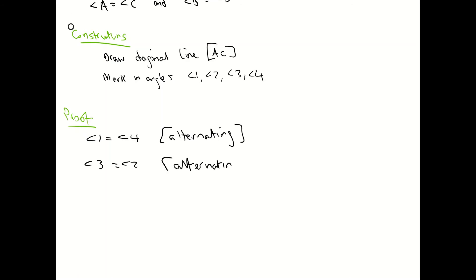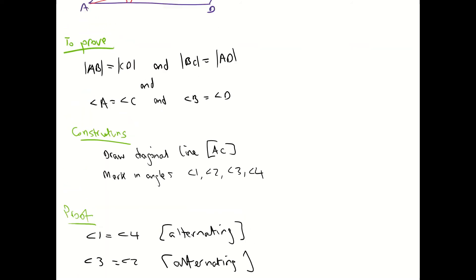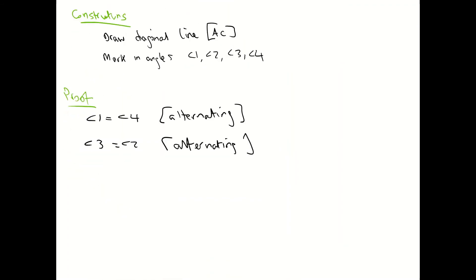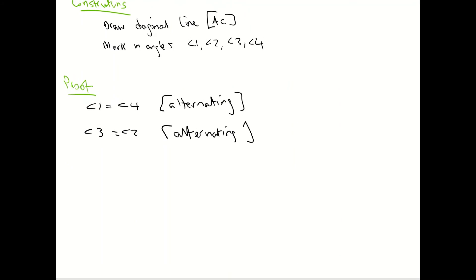And we need to show a third thing. The third thing I'm going to show is this diagonal line that we drew in. The reason why I drew this line here is because I know that it is going to be common to both triangles. So I'm going to say that the length of line AC is equal to the length of AC in the second triangle, because it is common to both triangles.